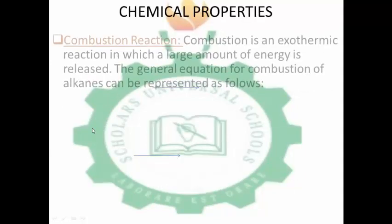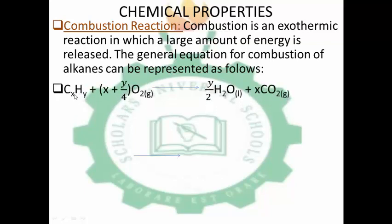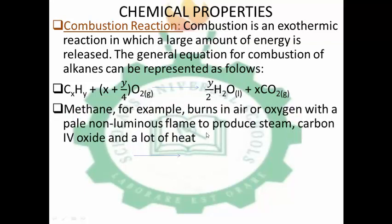Let us look at the chemical properties. Combustion reaction: combustion is an exothermic reaction in which a large amount of energy is released. The general equation for combustion of alkanes or hydrocarbons is represented using the formula CxHy plus O2. You balance the combustion reaction accordingly. Methane, for example, burns in air or oxygen with a pale non-luminous flame to produce steam, carbon dioxide, and a lot of heat.